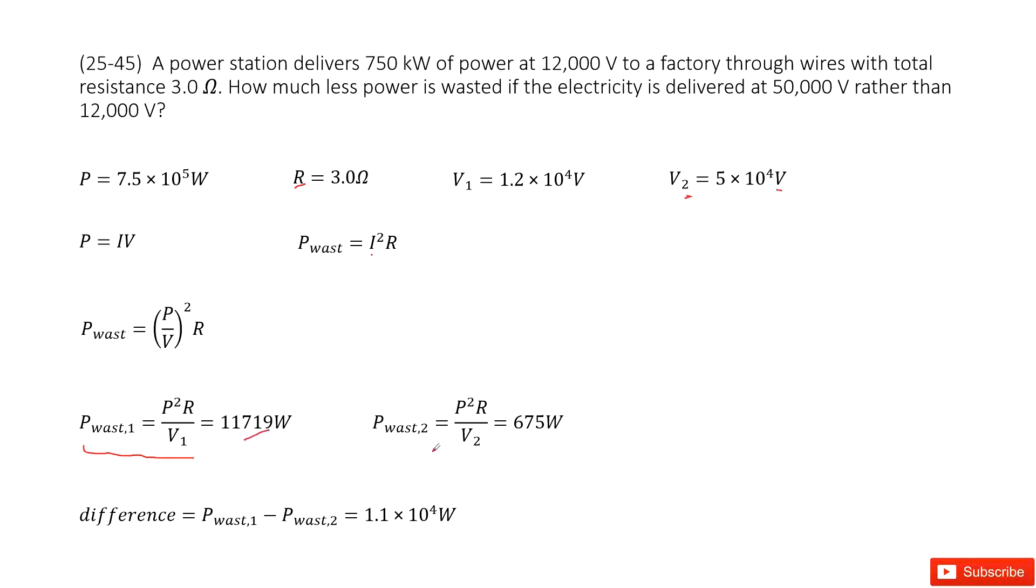The second case, the voltage becomes V2, that is 50,000 volts. So you input the V2, P, R in this function and get the answer there. And then find the difference between these two wasted powers, you get the final answer. Thank you.